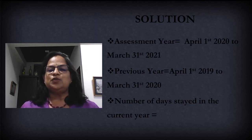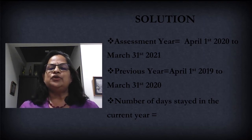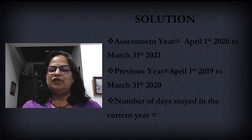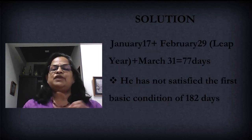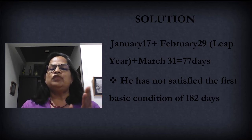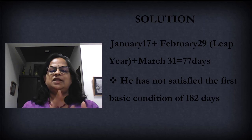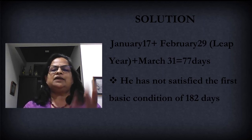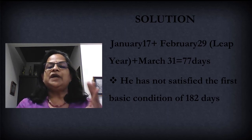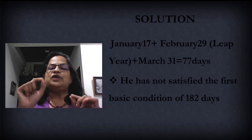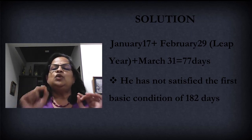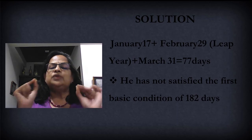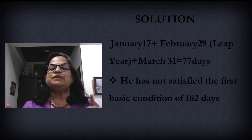The current financial year is your assessment year; the previous financial year is your previous year. The first step is to calculate the number of days stayed in the current year. January 15th — in between the month you have to count with your fingers: 15, 16, 17, 18, 19, 20, 21, 22, 23, 24, 25, 26, 27, 28, 29, 30, 31 — January gives 17 days. In between the month you cannot subtract 31 minus 15; you will get the wrong value.